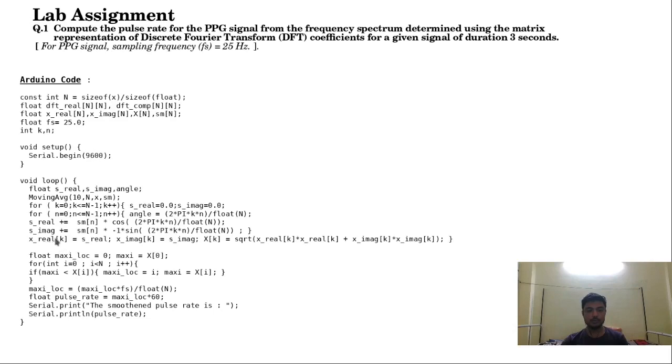Therefore we can calculate the real part. The summation keeps on happening for n equals 0 to capital N-1, and then we get the final values in x_real_k and x_imaginary_k. Then we get the coefficient capital X of k using the square root function. Thus we have our DFT coefficients for all N terms, and then we can calculate the pulse rate for the PPG signal as follows.